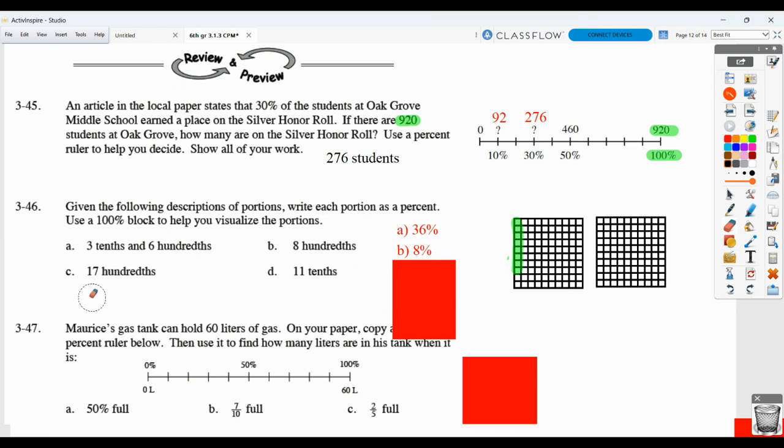It's a little trickier for D, but C is still pretty straightforward. For C, we're doing 17 hundredths. So this is 10 plus another 7. 17 hundredths is the same as 17%.